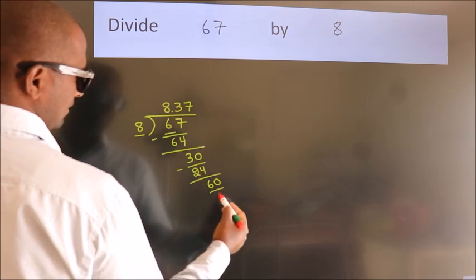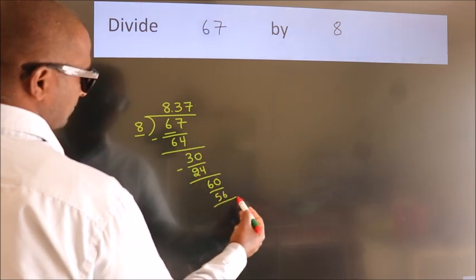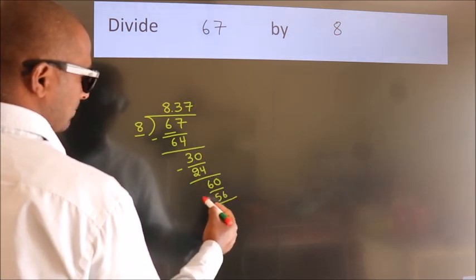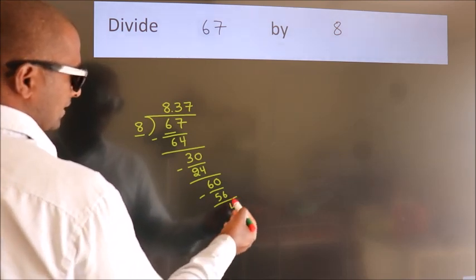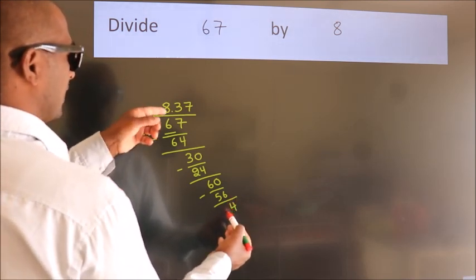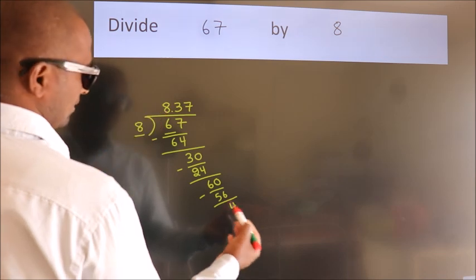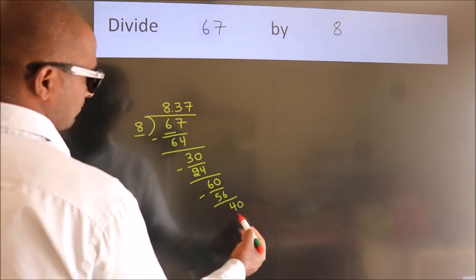times 7 equals 56. Now we subtract and get 4. After this, we already have the decimal, so we directly take 0, making 40.